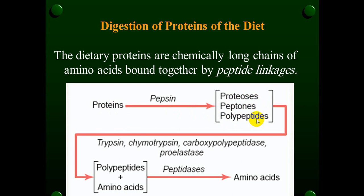The initial step of protein digestion occurs by pepsin in the stomach. The intermediate stage occurs by pancreatic secretions: trypsin, chymotrypsin, carboxypeptidase, and elastase — secreted into the duodenum — which digest protein into polypeptides and a few amino acids. The final stage occurs in the small intestine, which secretes peptidase to convert all polypeptides into the simple form: amino acids.